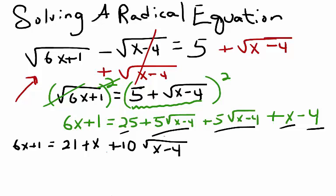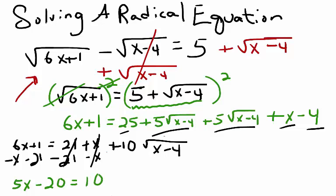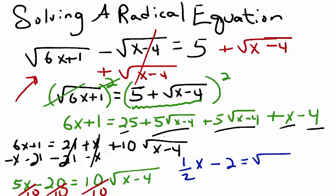I'll continue to combine like terms by subtracting 21 from both sides and subtracting x from both sides, bringing them to the left. Our goal is to once again isolate the radical. Now I have 5x minus 20 equals 10 square root of x minus 4. We can treat 10 as a coefficient to the radical and divide it from both sides, taking care to divide every term. Now I have one-half x minus 2 equals the square root of x minus 4.